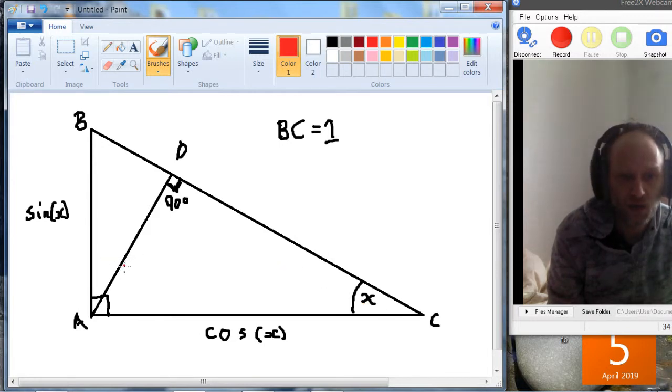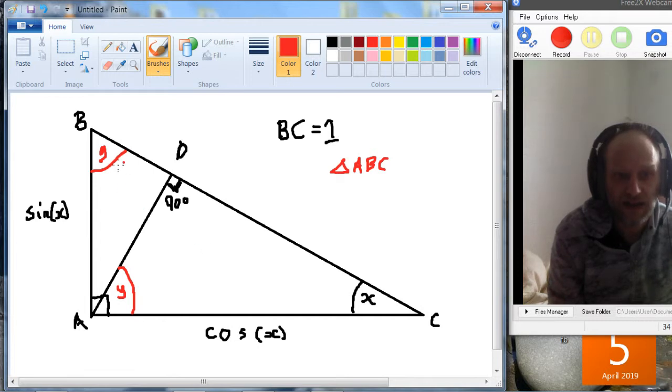So what that means is that this angle here and this angle here are the same. Because if we look at the triangle ABC, let's give this a name Y for a minute. Then in the triangle ABC, we've got a 90 degree triangle, so we know X plus Y equals 90.